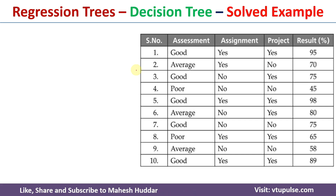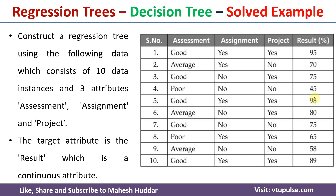We have been given a data set with three attributes: assessment, assignment, and project. Result is the target variable. If you look at the target variable, it contains continuous values. Given this data set, we cannot build a decision tree using the ID3 algorithm or C4.5, because both those algorithms expect the target to be discrete in nature. But in this case, the target is continuous, hence we need to build regression trees here.